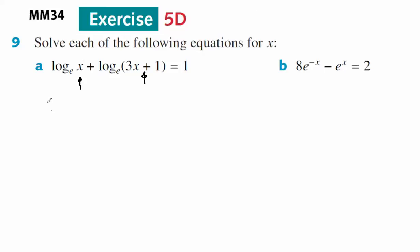OK, so if I use my log laws, I've got x times 3x plus 1 equals 1. And if I turn this into an exponential, e to the 1 equals 3x squared plus x. If I move the e over, 0 equals 3x squared plus x minus e.